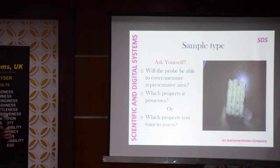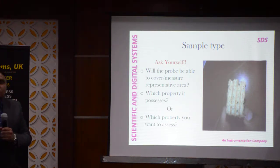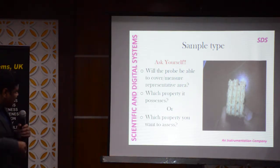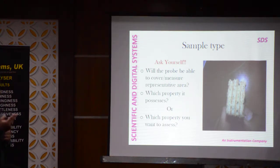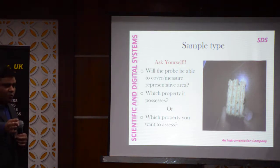Second consideration: which property does it possess? If I want to check crunchiness or crispiness of a product, I will not use a smaller probe — I will use a bigger probe, or do multiple punctures or a multiple cutting test, because my objective is to test crunchiness, not just the hardness of the bar. You need to decide whether you want to assess hardness of the surface, structural hardness of the whole bar, or crunchiness. It all depends on your requirements — it is you who decides, not the machine.